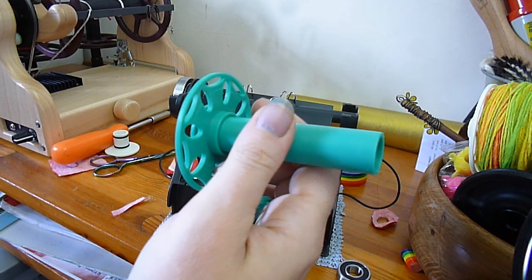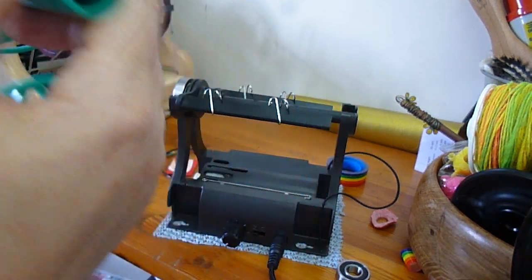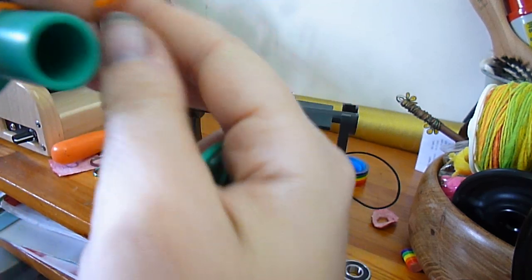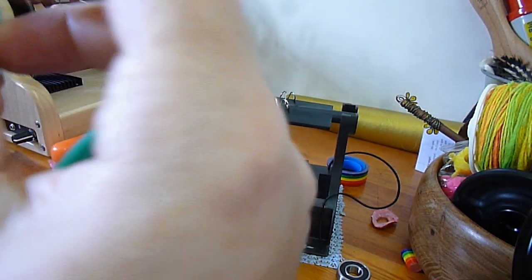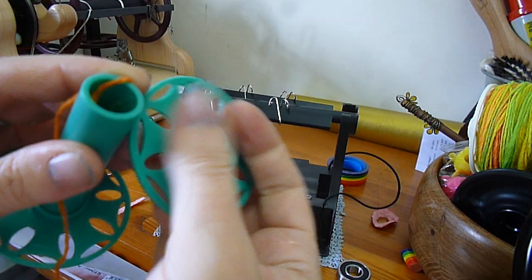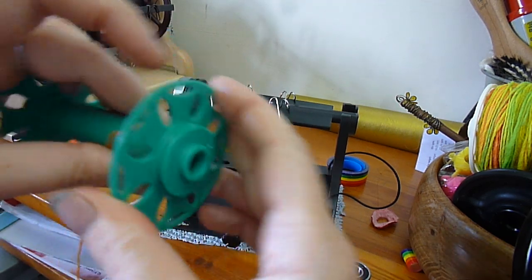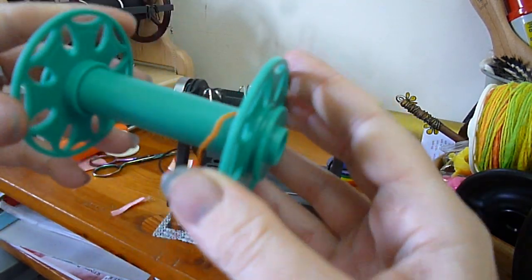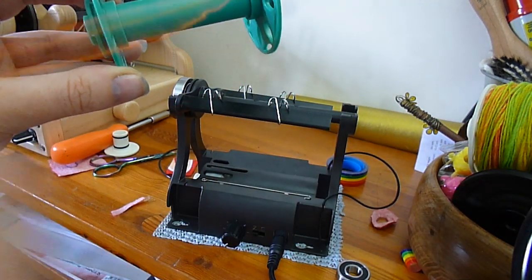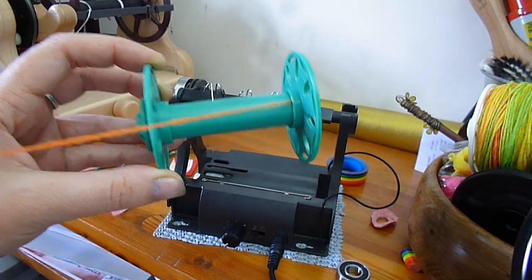So, quick fix and an easy way to get a leader on. Get your leader yarn. Put it down the end of the bobbin so it's in place. And snap that on. Now that's far firmer and it doesn't twist. And your leader's nicely attached, so it's not going to slip.